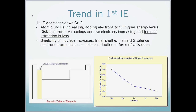Let's first look at the trend in the first ionization energy. Generally, it decreases down the group, and this is because the atomic radius is increasing as we go down, which means that we are adding electrons to fill higher energy levels. This means that the distance from the positive nucleus and the negative electrons is increasing, and therefore the force of attraction is less. As we go down the group, the shielding increases. The inner shell electrons shield the two valence electrons from the nucleus, which means that further reduction happens in the force of attraction.